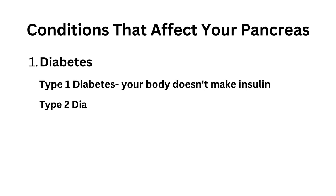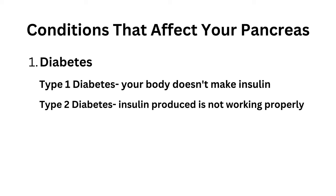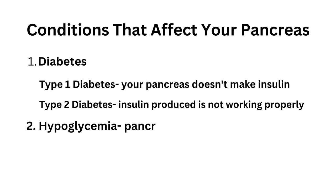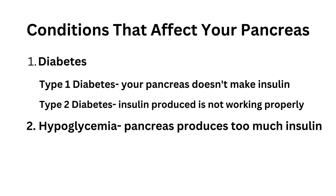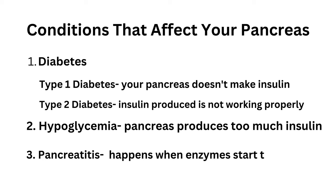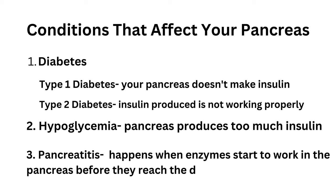Type 2 diabetes, on the other hand, is a condition that results from defective insulin. Your pancreas is able to make insulin, but the insulin it's producing is not working or it's not able to do its job. Hypoglycemia arises when your pancreas produces too much insulin. Pancreatitis is a condition that happens when your enzymes get activated in the pancreas before they reach the duodenum, where they're actually supposed to work and digest food.